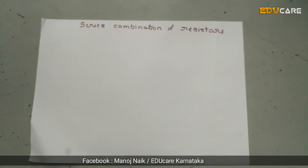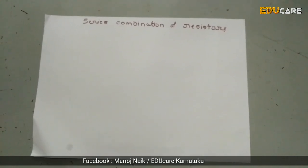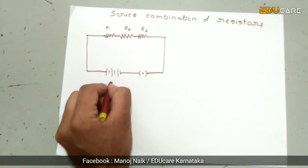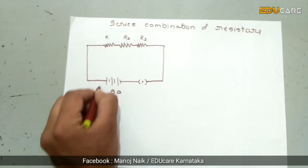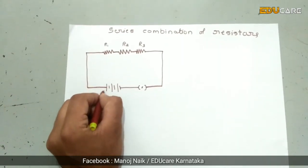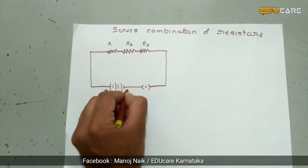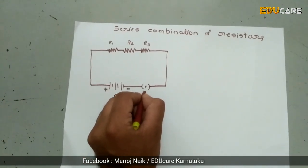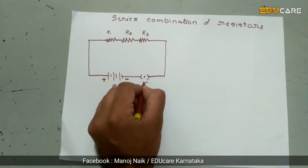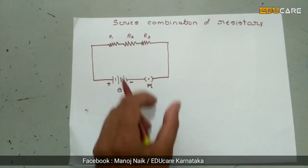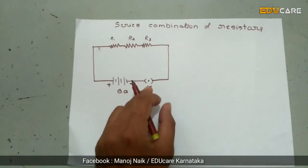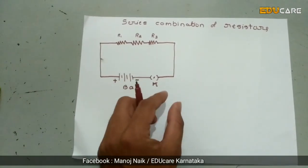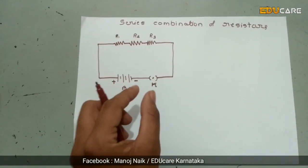This is the battery. This is the positive line. This is the negative line. This is the plug key. This is the switch.